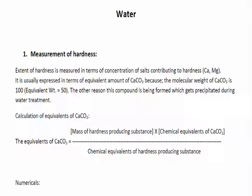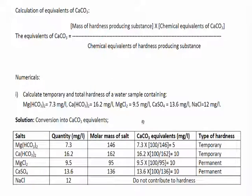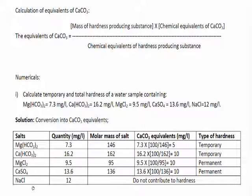If you have this formula and practice calculating the molar mass of chemical compounds, then you can solve these problems. Let's take this example. Here the concentration of different salts is given and you have to calculate temporary and total hardness. You can make a table and put the impurities or salts in it along with the concentration of each salt. You know that calcium and magnesium salts only produce hardness in water, so salts other than calcium and magnesium, like NaCl or KCl, should not be considered.